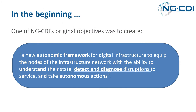In the beginning — this is the really scary bit — what we said we'd do in the proposal. One of our original objectives was to create a new autonomic framework for digital infrastructure to equip the nodes of the infrastructure network with the ability to understand the state, detect and diagnose disruptions to service, and take autonomous actions. It's that 'detect and diagnose disruptions' that we've really been focusing on within the anomaly and recommendation stream of work.